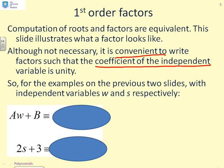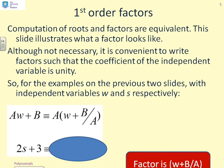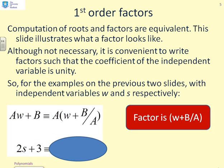If we wanted to find the factor, what would we do? Well, first we take the A out, and so we can rewrite this as A times (w plus B over A). And the factor is then this term over here. You can see w plus B over A.